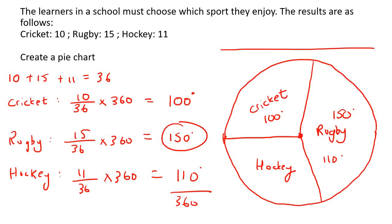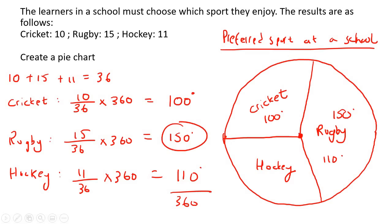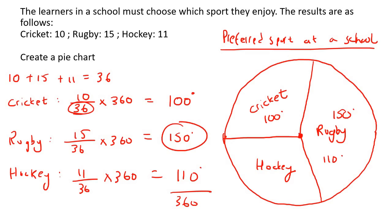You can put a heading on the pie chart — not necessarily saying 'pie chart,' but rather describing the data, like 'the learners in the school must choose which sport they enjoy.' Always give yourself a heading. That's how you create a pie chart. Remember, you always use 360, the denominator is the total of all values added together, and the numerator is the individual value.